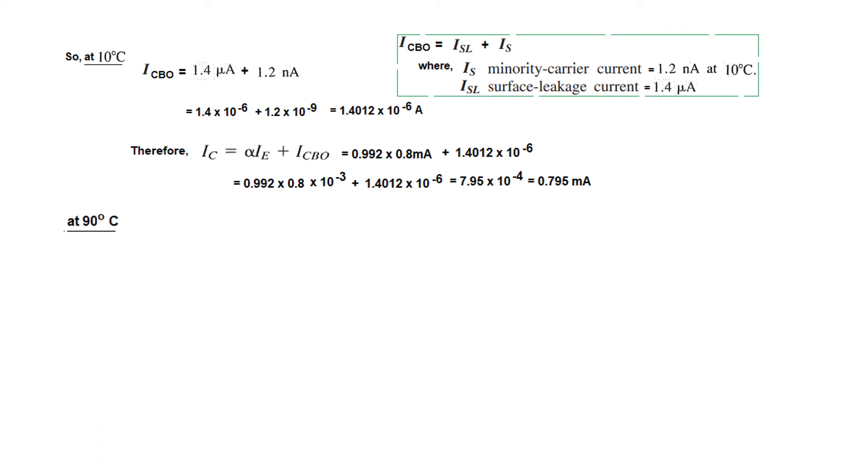Now at 90°C. Before calculating the collector current, let us understand what changes occur in IS. We know that IS doubles with every 10°C rise in temperature. Here the rise in temperature is from 10° to 90°. That means it will double (90 minus 10) divided by 10, that is 8 times. So IS will double 8 times.